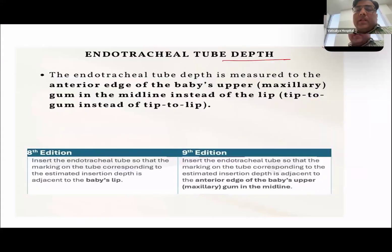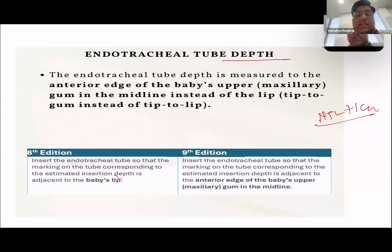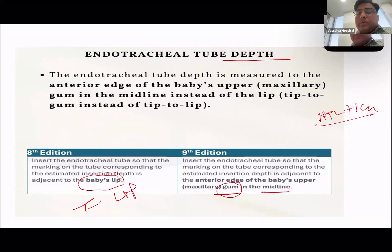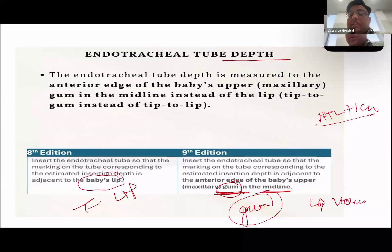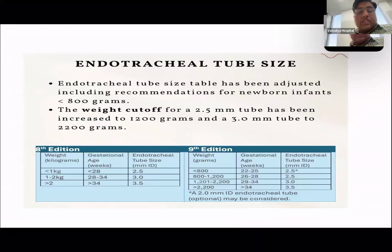Next is ET tube insertion depth. The measurement formula remains the same — nasal-tragus length plus 1 cm. However, previously the number on the tube was read at the lip of the baby. Now they have changed from lip to gum — the number is read at the upper gum, midline of the upper gum. Studies found that lip position is variable but gum position is fixed, so the upper maxillary gum at midline is now the reference point for ET tube depth.